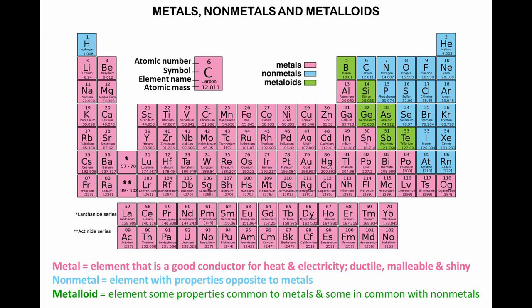Ductility is a physical property of metals that describes their ability to stretch, pull, or be bent into a thin wire or thread without breaking. Malleable means that a metal can be shaped under pressure without breaking. A nonmetal is an element with properties opposite to metals.